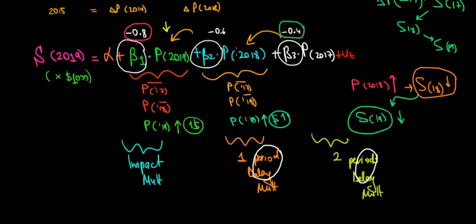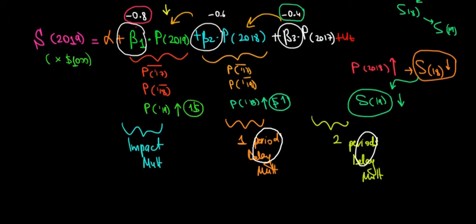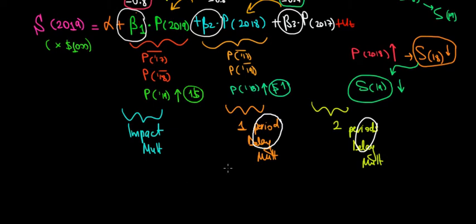First of all, we're going to have the effect of beta 2. So we're supposing that the price in 2018 is going to increase by one unit, which is one dollar. We're going to have the effect of beta 2, which is equal to minus 0.6 based on our example. So minus 0.6.